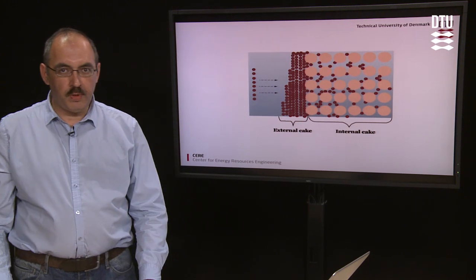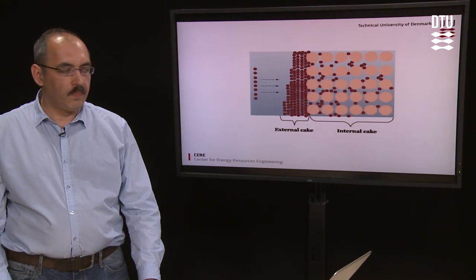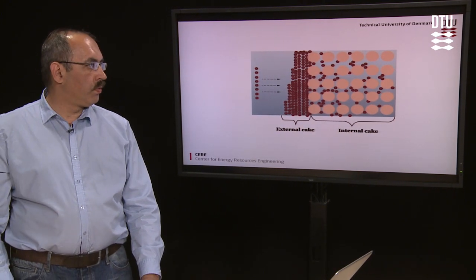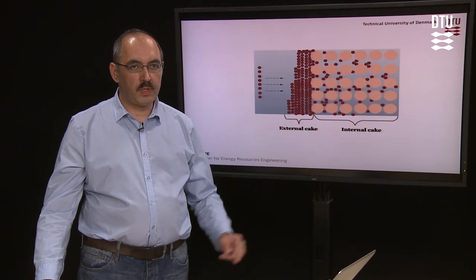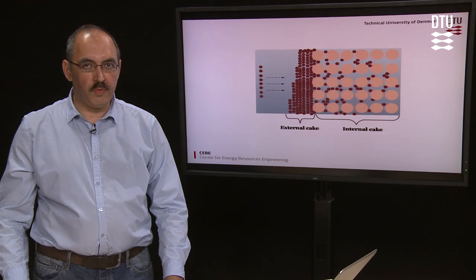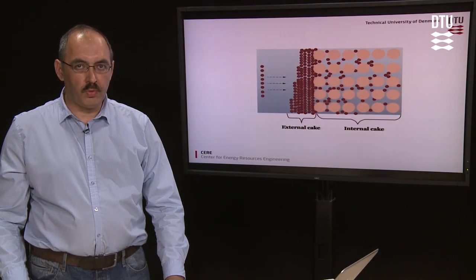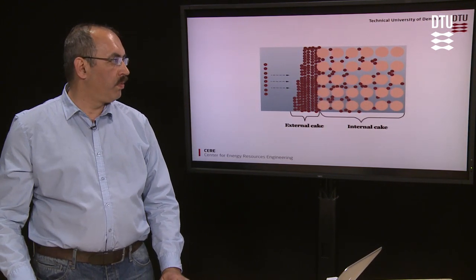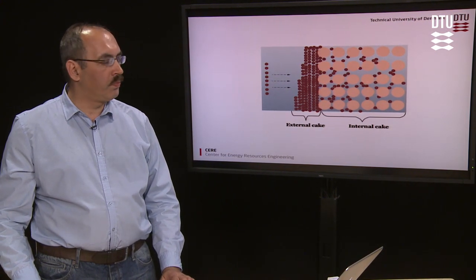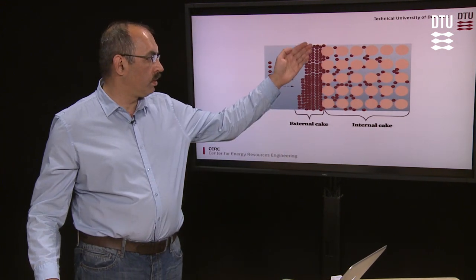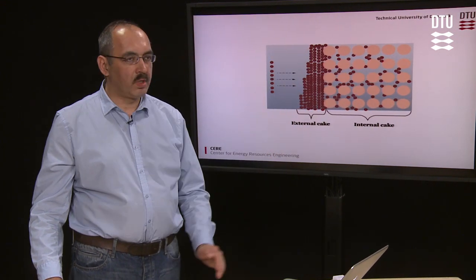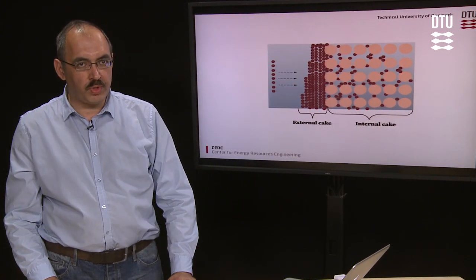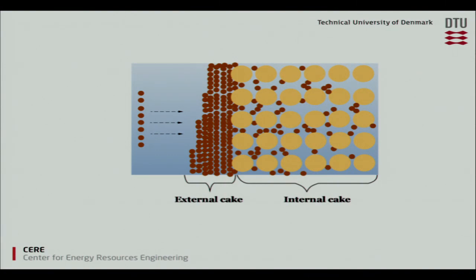There may be two types of filter cakes. First of all, there are particles which really go inside the rock, and they form what is called internal filter cakes. But when the permeability of the rock decreases, some of the particles start accumulating outside the rock and form what is called external cakes.